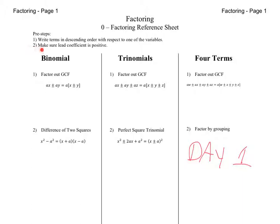When factoring, always do these pre-steps first: one, write the terms in descending order, and two, make sure your lead coefficient is positive.